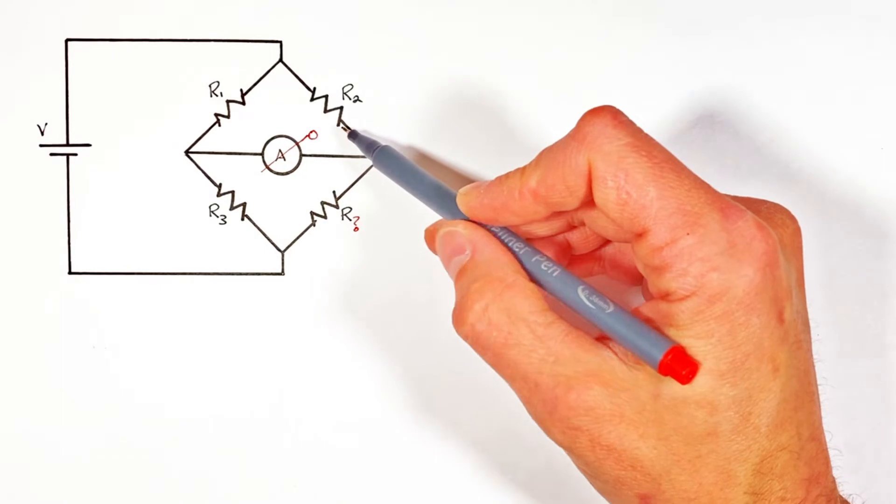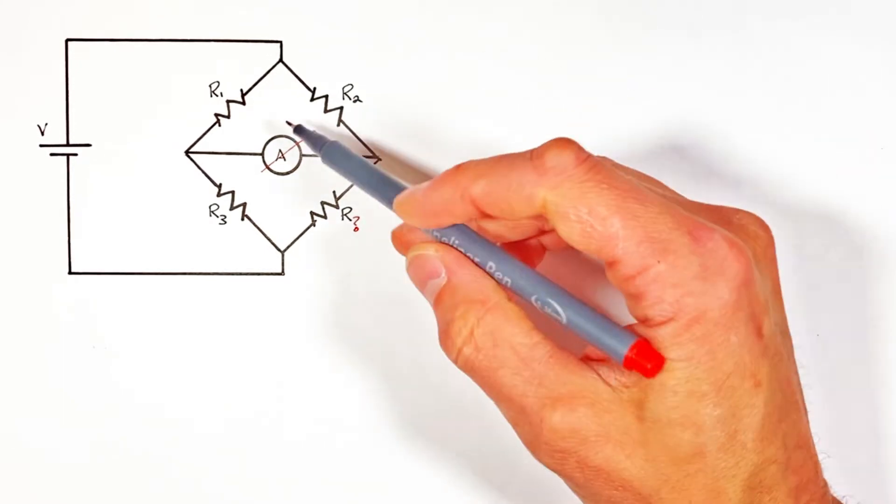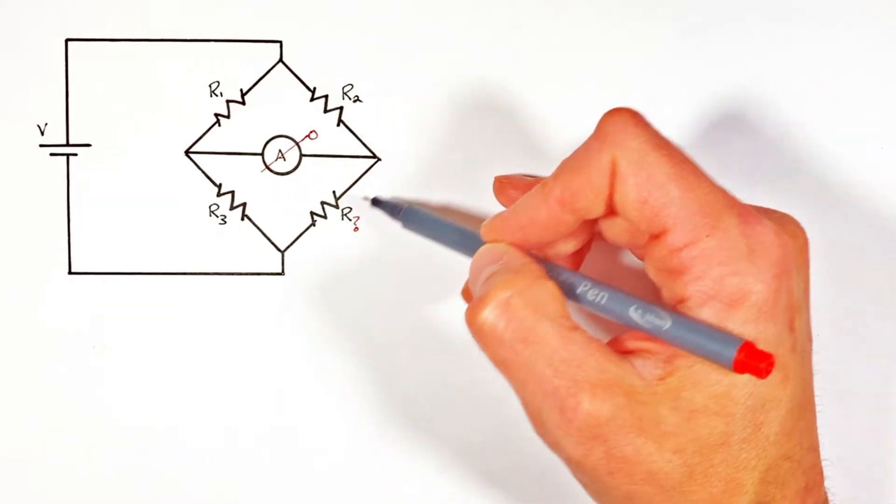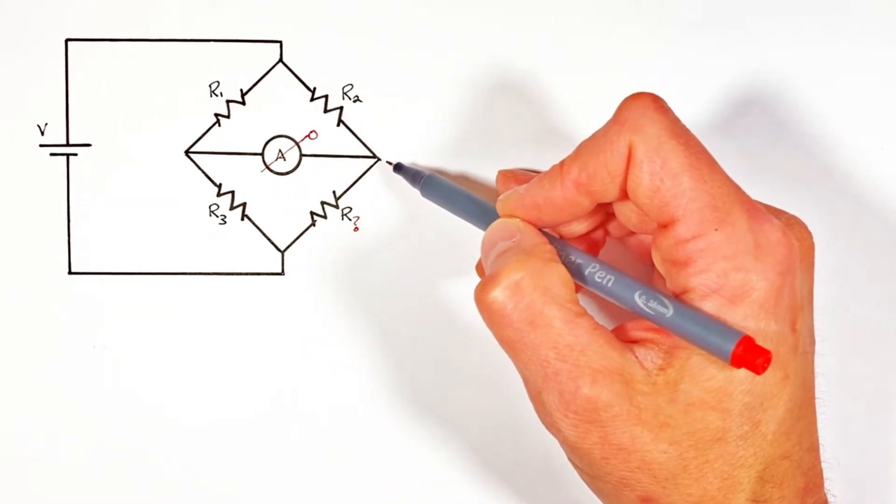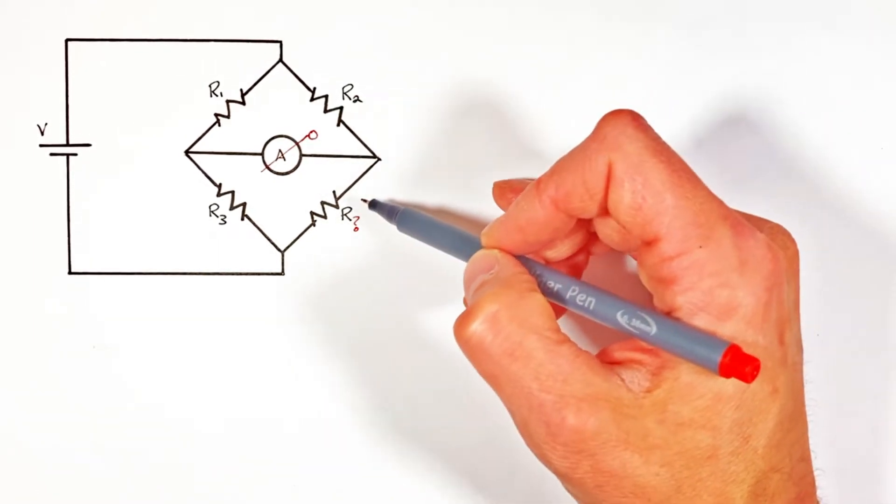Now you typically see a problem like this when you first start looking at Wheatstone bridges, and the purpose behind this and the usefulness of this bridge is a little bit lost to most people at the beginning because it's hard to see. You need to work out quite a few different Wheatstone bridges before you recognize the usefulness of this type of circuit.